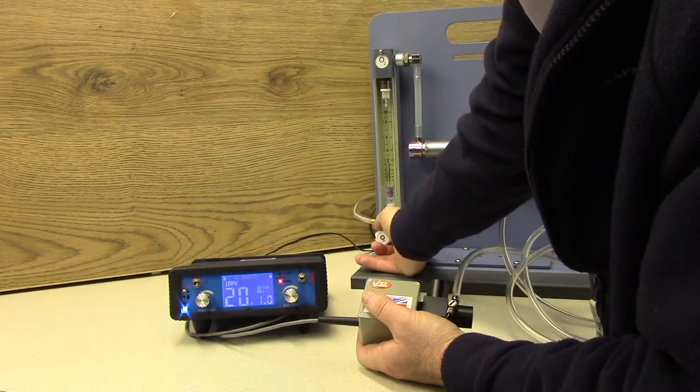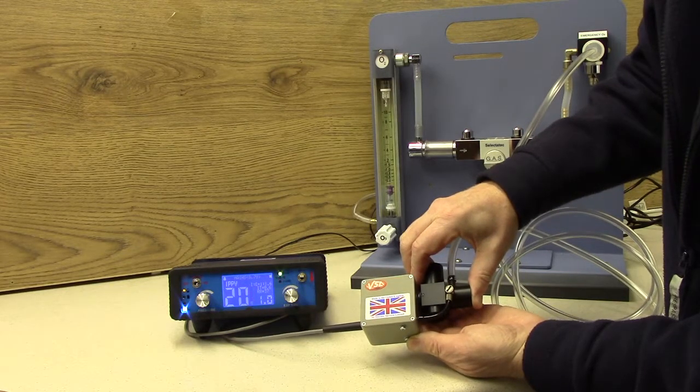Set the incoming gas flow rate to 200 mls per minute. Then place your thumb over the end of the ET connector to close off the airway.